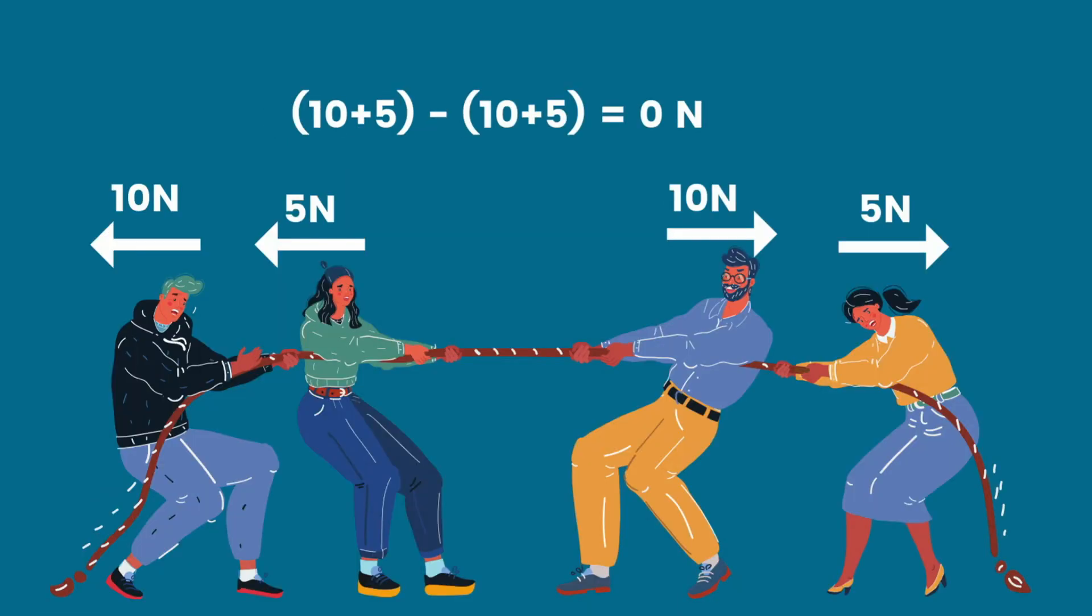In this example, we add the two forces on the left and the force on the right. We then subtract their totals, which will give us a net force of zero.